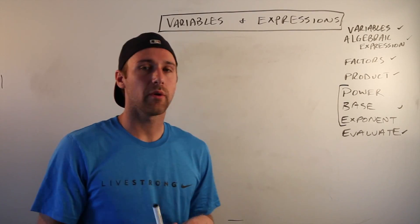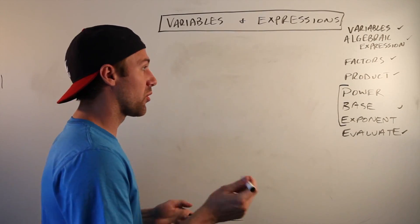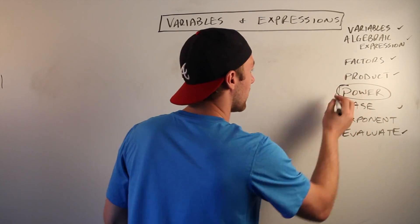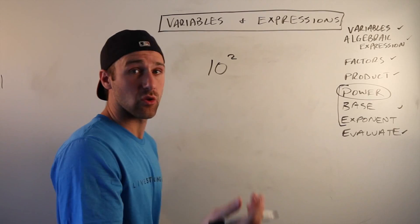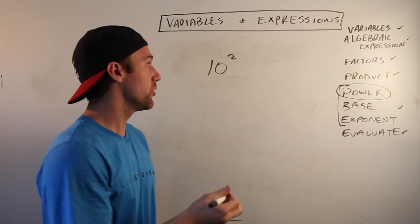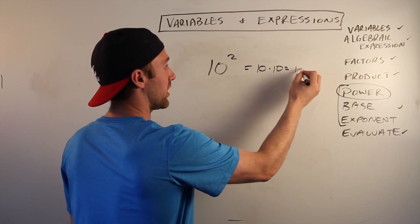What's up! Okay, so I want to show you essentially a cheat code for when you're doing a power and the number is 10. Let's say we've got 10 to the second power, 10 squared. You're doing 10 times 10, which would equal 100, correct?